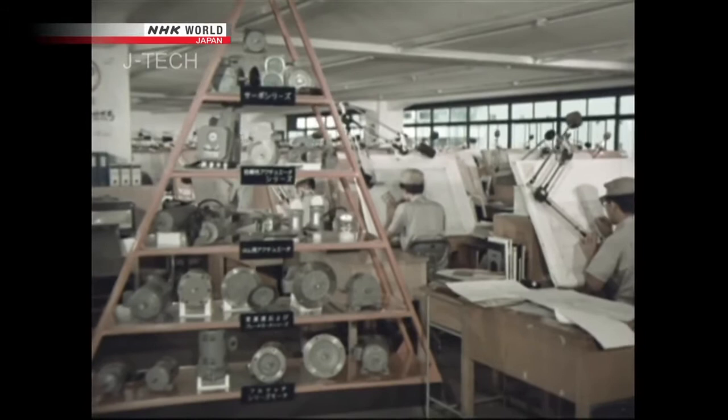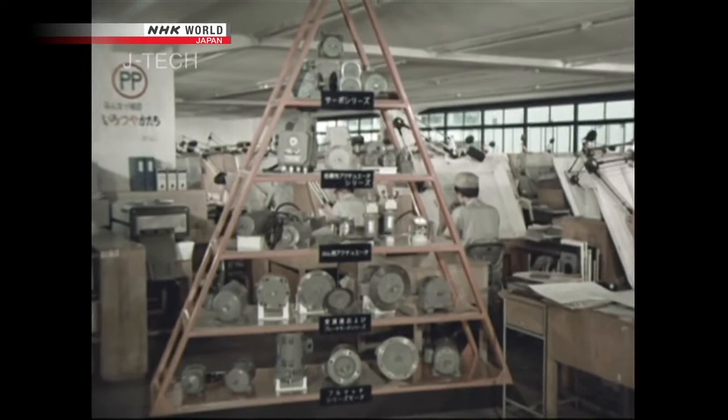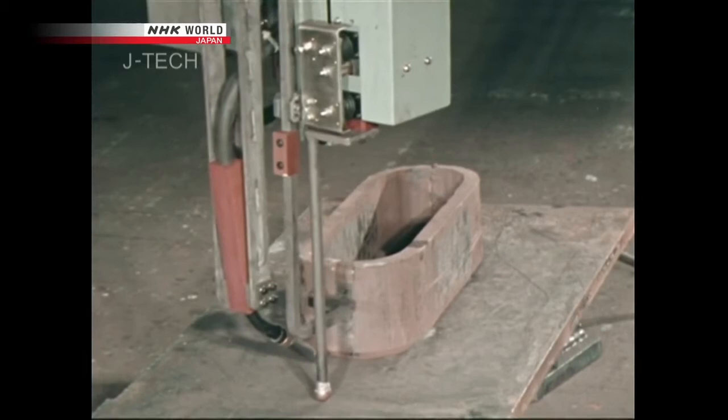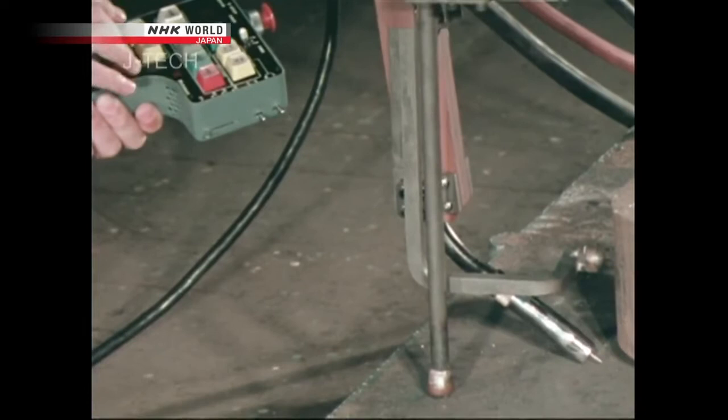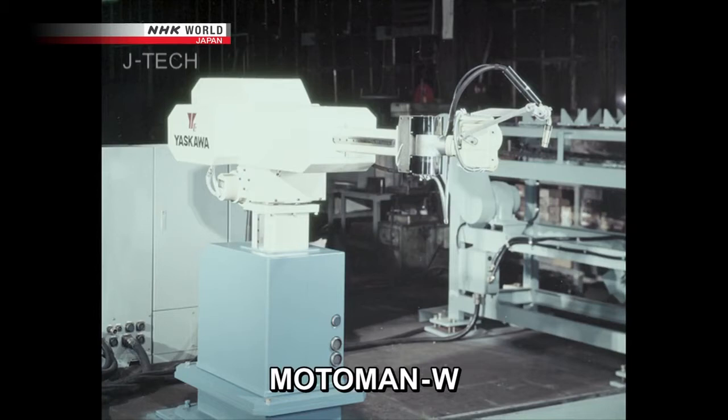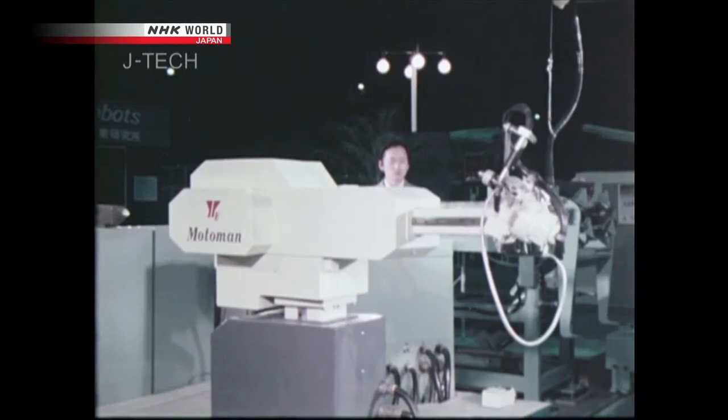In 1971, Yasukawa started prototyping a robot based on the improved motors it was using in its factory automation systems. To control the robot's movements, it developed a computer system into which coordinates could be input via an interface called a pendant. Three years later, in 1974, their first prototype was showcased at an international robotics exhibition in Tokyo.